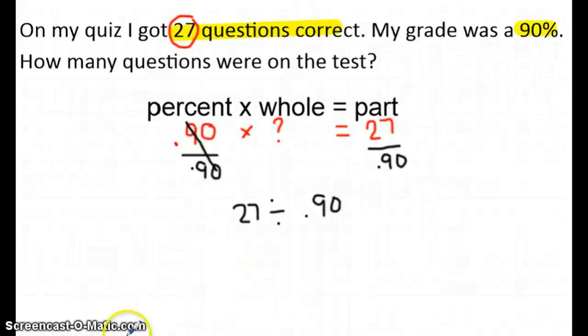What we could do now is set it up like a division problem. So 0.90 on the outside, 27 on the inside. But you should remember that we don't like those decimals outside. So we're going to convert that into a whole number. And whatever you do to one, you have to do to the other. Add some zeros in there. The decimal point is now at the end, and it's very important to bring it up.